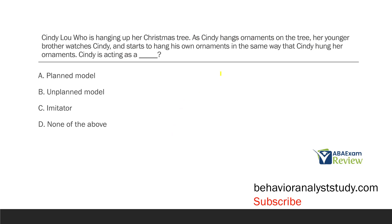Cindy Lou Who is hanging up her Christmas tree. Cindy hangs ornaments on the tree. Her younger brother watches Cindy and starts to hang his own ornaments in the same way that Cindy hung her ornaments. Cindy is acting as what? We're looking at Cindy relative to her brother. She is hanging ornaments, her brother watches and imitates her. Be careful here because we're looking at Cindy's behavior — her brother is imitating, so Cindy is not the imitator. She is the model.